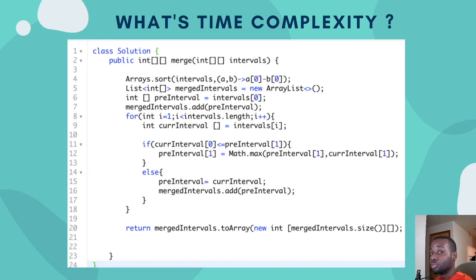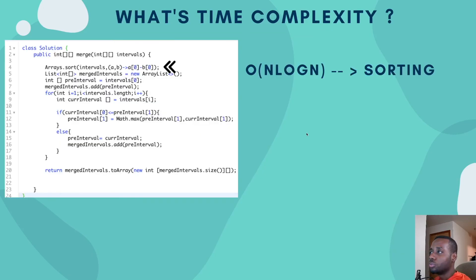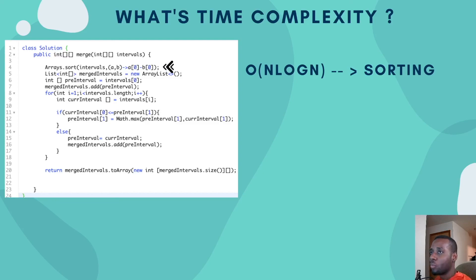Let's do another example. Here we're sorting, and after sorting we're applying a merging algorithm — a linear loop through the array. The time complexity is O(n log n) because of the sorting step. The function is bounded by its highest-order term. For example, if a function had O(n²) logic, then O(n) logic, then O(n log n) logic, the overall complexity would be O(n²) — we always take the highest term, since that's what the program is ultimately bounded by.